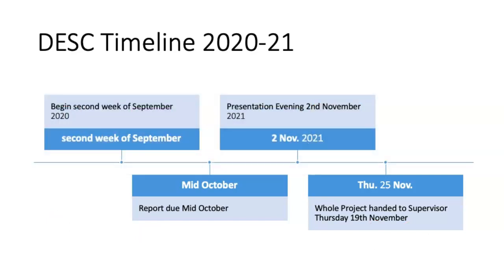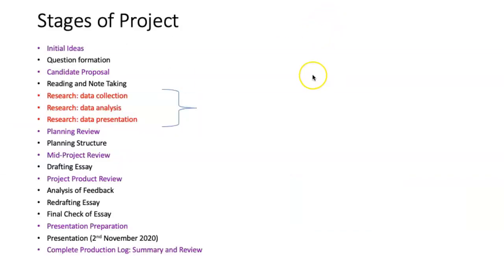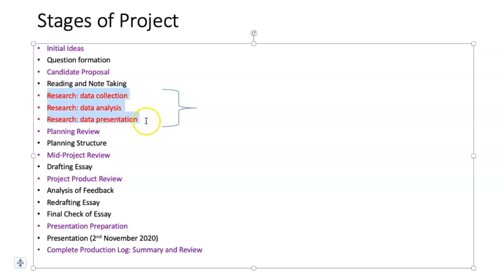In terms of smaller dates, in your project plan you need to refer to the initial ideas, question formation, the drilling down and narrowing of the topic. You've just finished the candidate proposal, some of you in December or finishing now in January. You could put down things about reading and note taking, whether you'll do different sections, and if you're doing primary research, you could refer to data collection, data analysis and data presentation. If you're doing a literature review, show exactly how you broke it down — by topic, by year, or by one side of the argument first and the other side later.